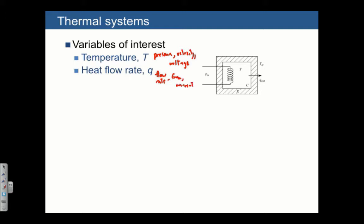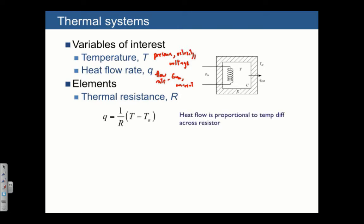There are only two elements of interest in thermal systems. One of them is the thermal resistance, and it's very similar to the fluid resistance and has a similar formula for the element law, which is that the flow rate is one over R times the temperature difference, generally with respect to an ambient temperature. Here, heat flow rate is proportional to the temperature difference across the resistor. And the higher the resistance, the lower the flow rate.